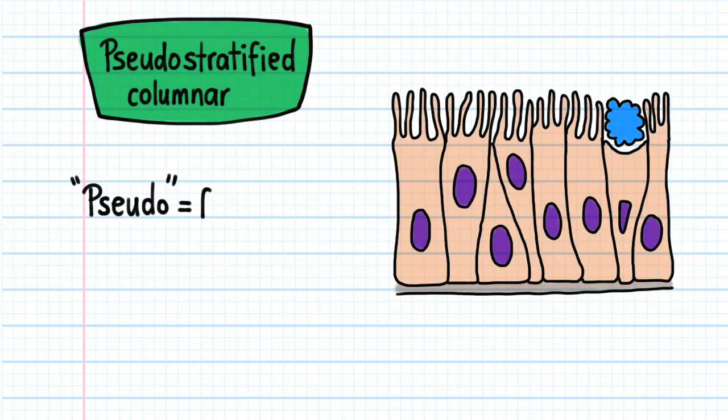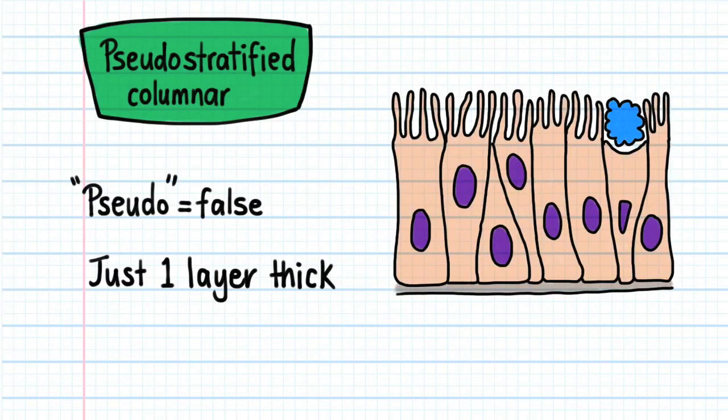Pseudo means false. The epithelium looks stratified, but it's actually not. There is only one layer of cells present, because all of the cells touch the basement membrane.